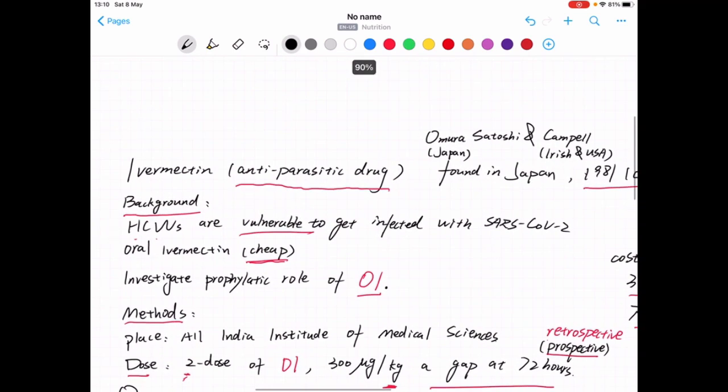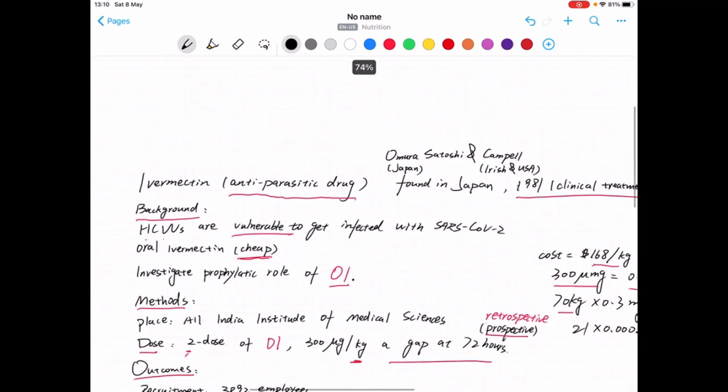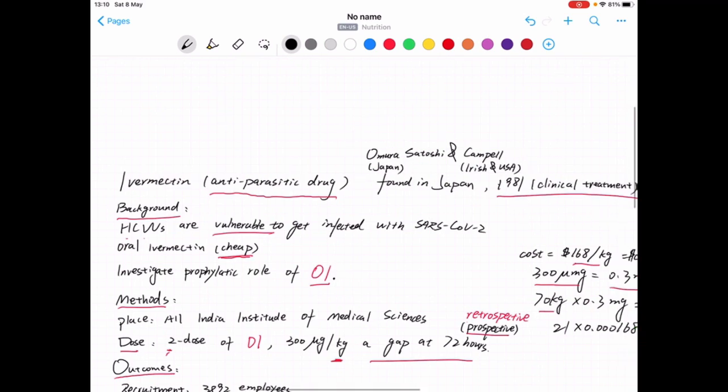So what is Ivermectin? Originally, Ivermectin was an antiparasitic drug, and it was founded in Japan by Omura Satoshi and Campbell, and it was officially being used in clinical treatment in 1981.